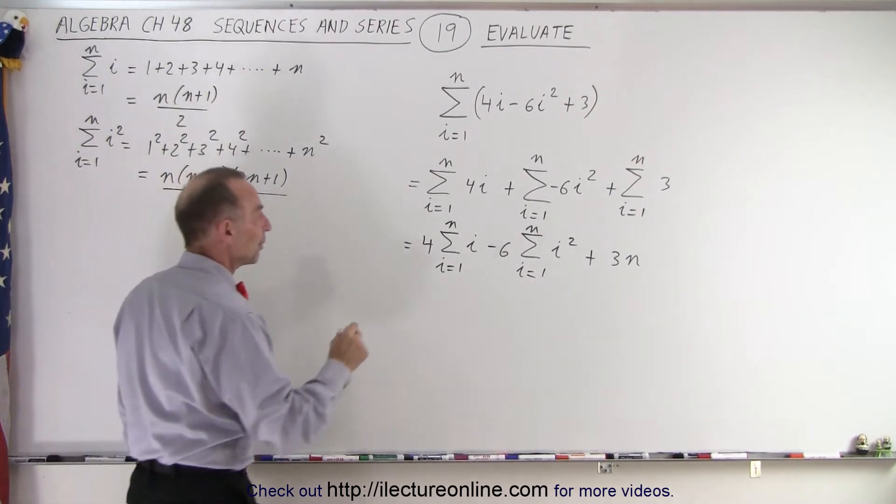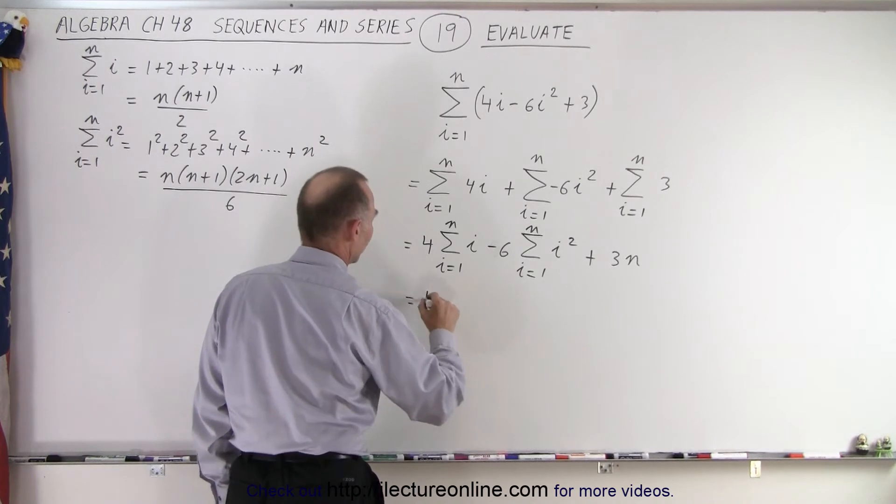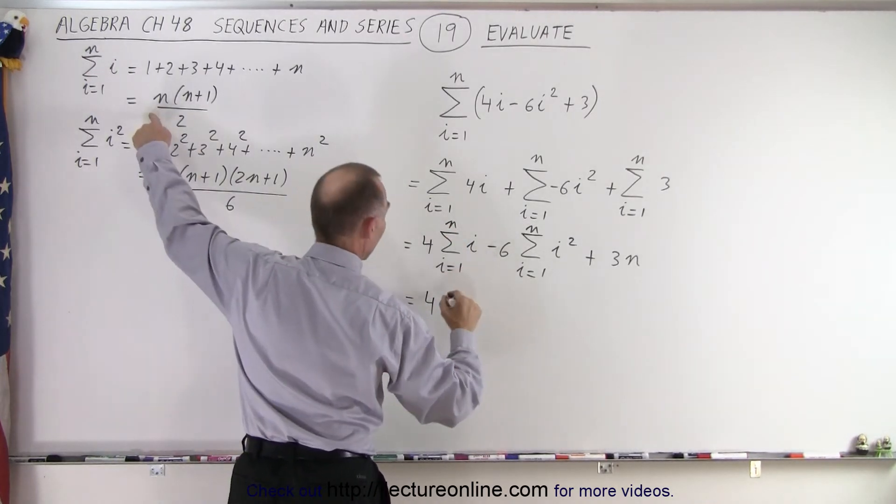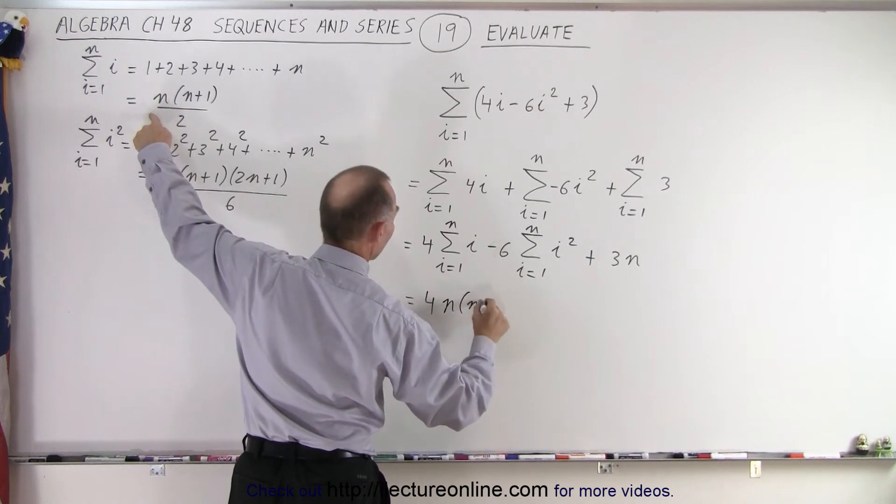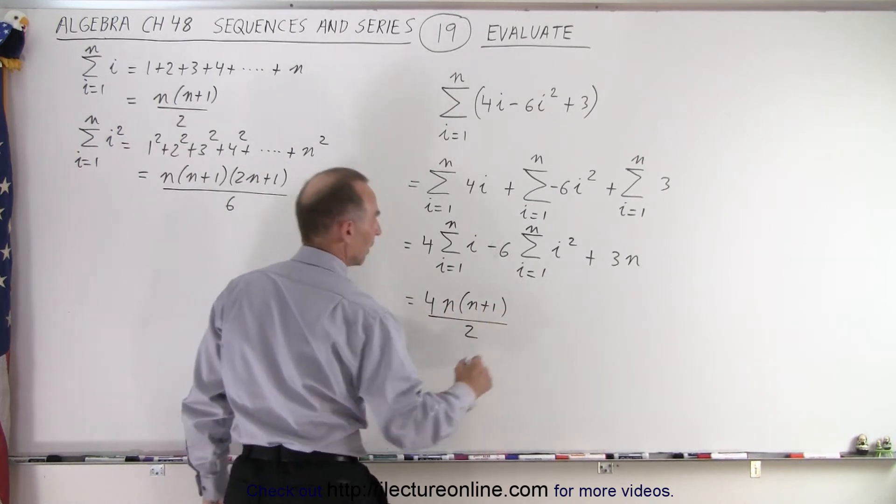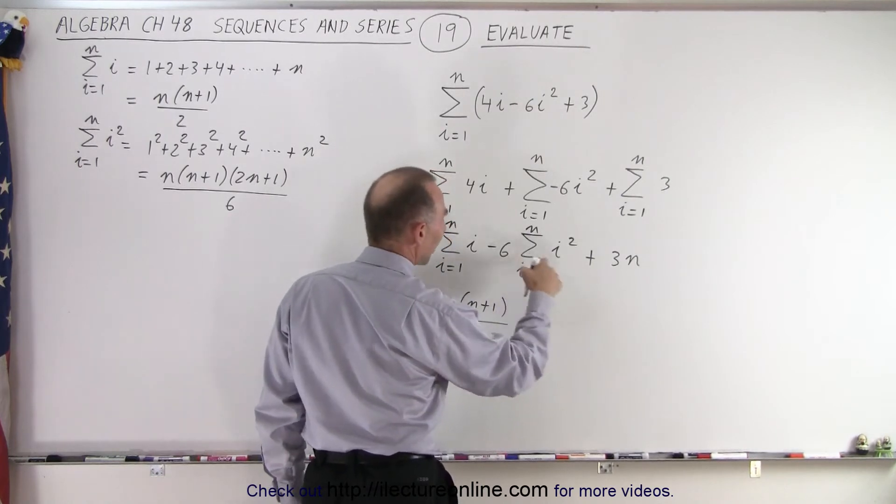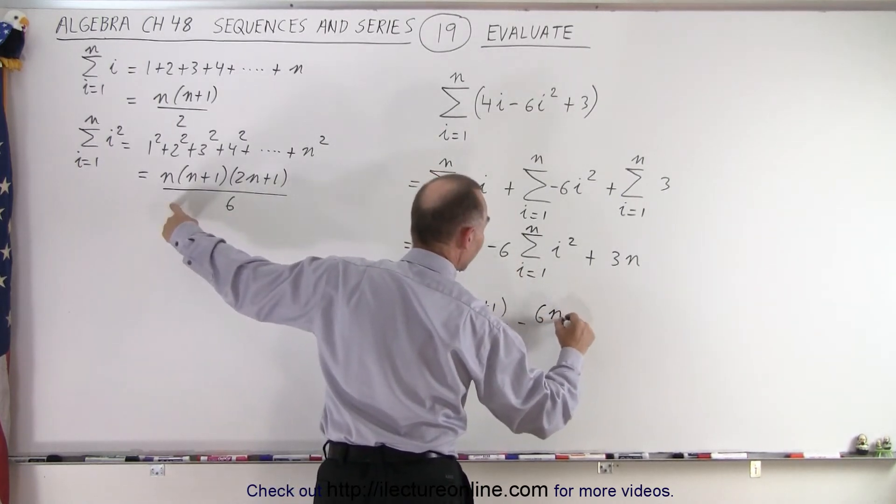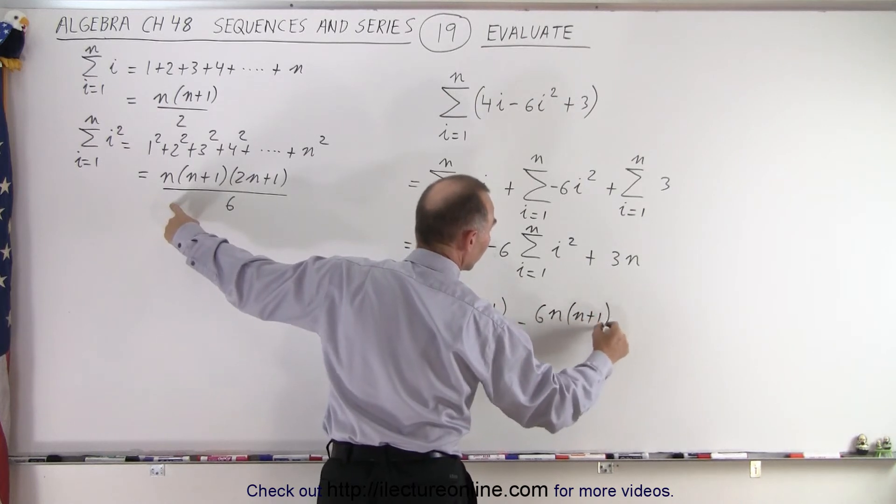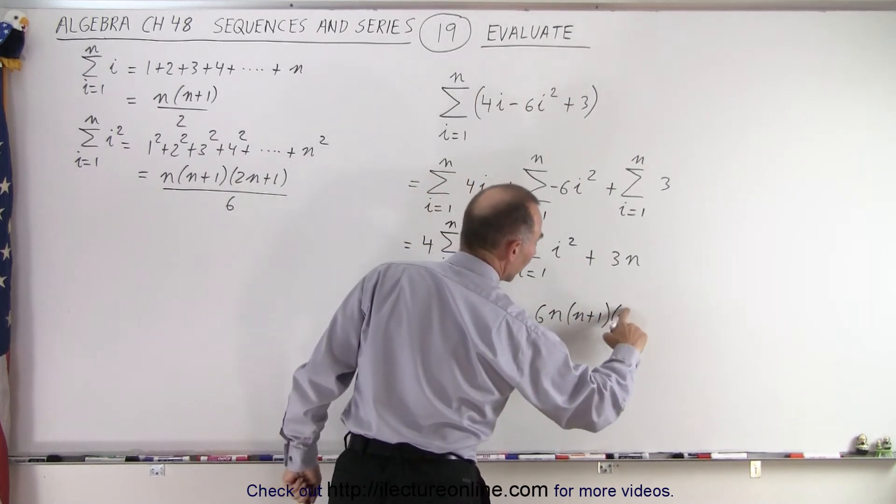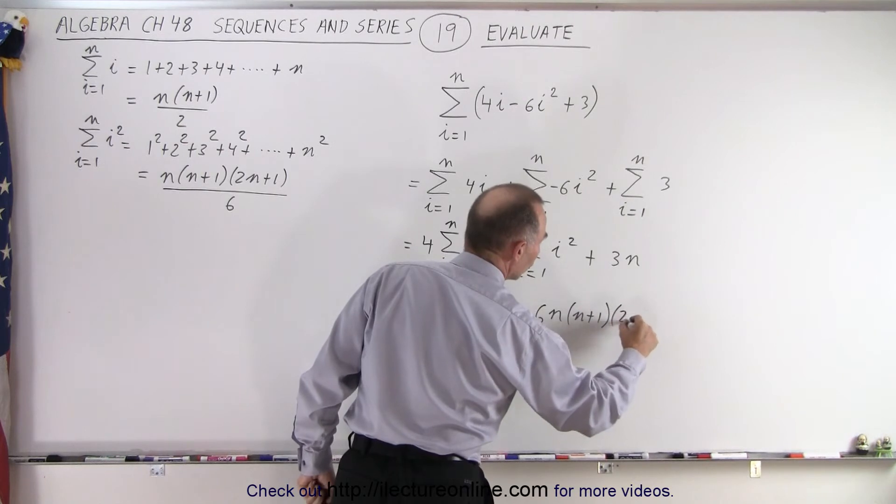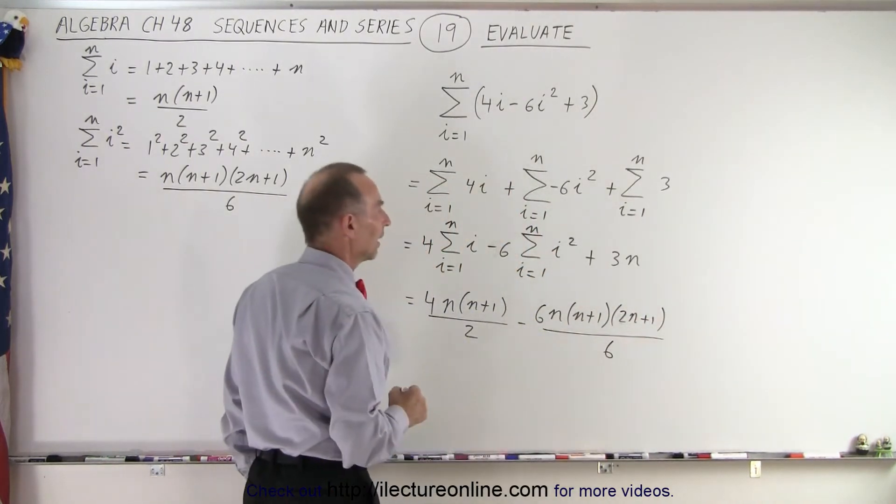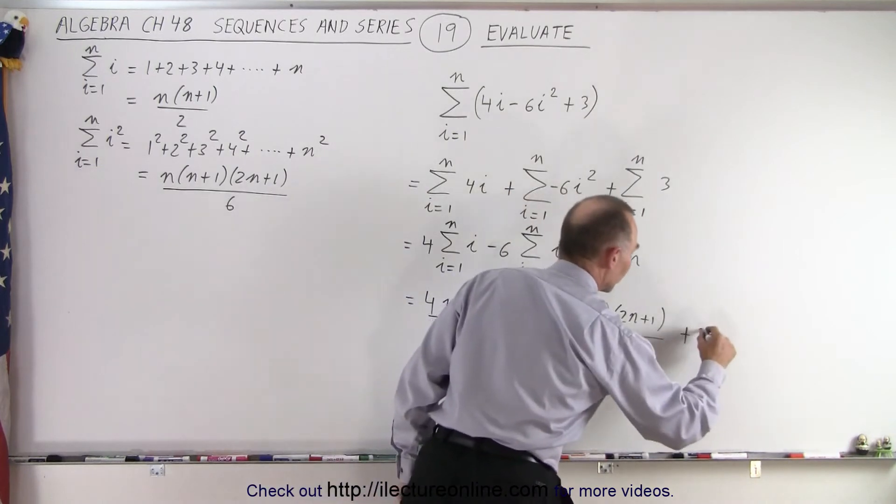So now what we can do is write the following. This is equal to 4 times n(n plus 1) divided by 2, minus 6 times n(n plus 1)(2n plus 1) all divided by 6, and then finally plus 3n.